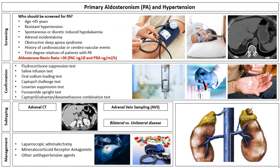Primary aldosteronism is the most common cause of endocrine hypertension, accounting for about 10% of the hypertensive population in the community and 20% of cases attending hypertension clinics. In their chapter on primary aldosteronism or Conn's syndrome, Filippo Secato, Irene Tizianel, Giacomo Voltan, and Franco Mentaro provide a comprehensive update of the clinical, pathophysiological, diagnostic and therapeutic aspects of primary aldosteronism.